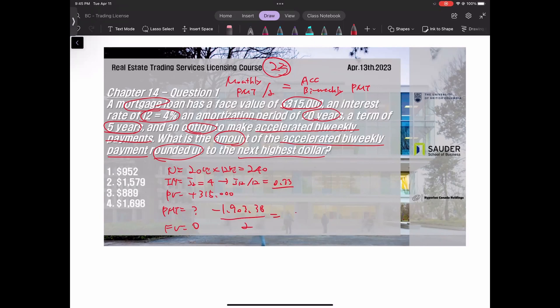You get minus $1,903.38. This is the monthly payment. To get accelerated biweekly, we just divide by 2. Dividing by 2 gives us $951.69.